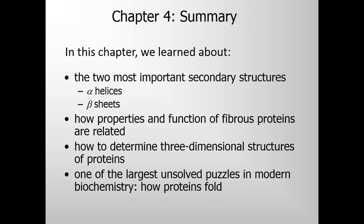We come to the end of this chapter. Let us summarize. In this chapter, we learned a lot of things. We learned about the two most important secondary structures: alpha helices and beta sheets. We also learned about beta turns. We learned how properties and function of fibrous proteins are related, how to determine three-dimensional structures of proteins, and one of the largest unsolved puzzles in modern biochemistry — how proteins fold — which specifically deals with globular proteins.